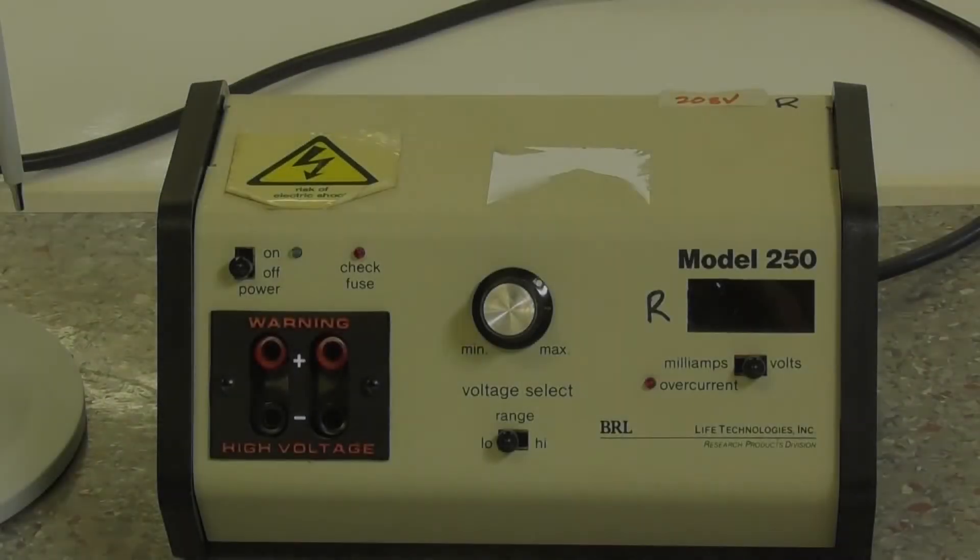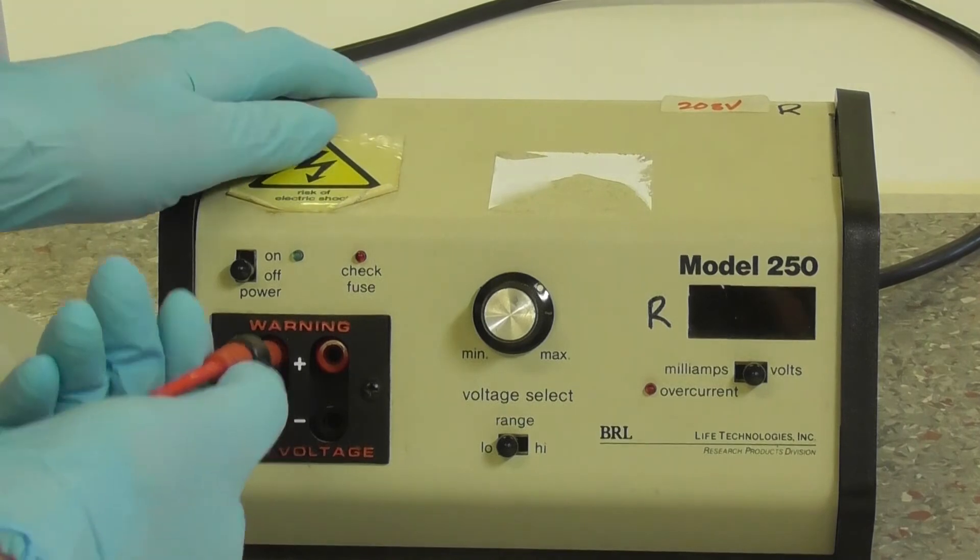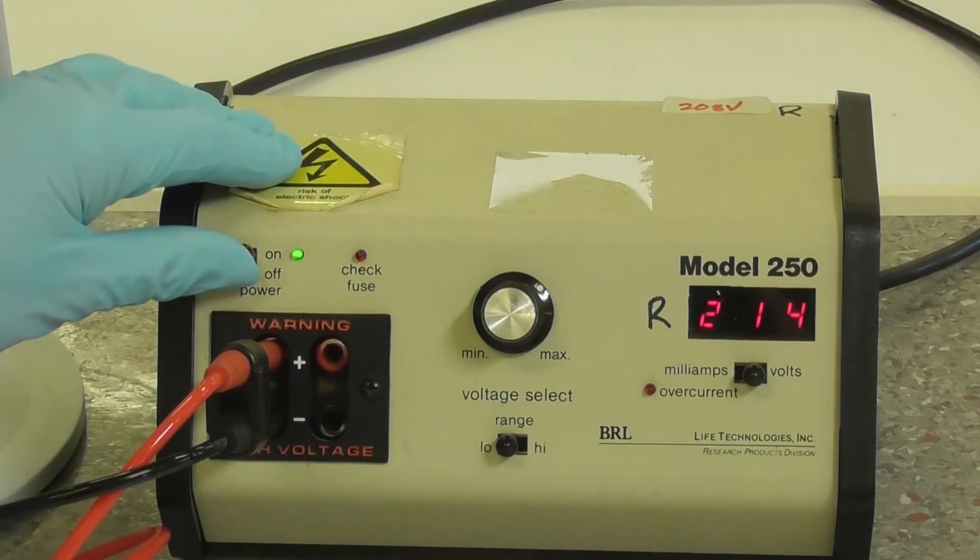Connect the electrophoresis unit to the power source ensuring black connects to black and red connects to red. And then switch on.